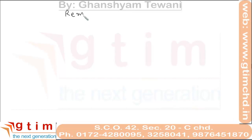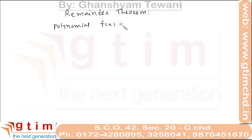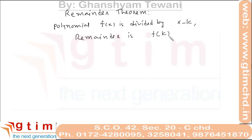Remainder Theorem. When polynomial f(x) is divided by x minus k, the remainder is f(k). In fact, when we divide polynomial f(x) by x minus k, the remainder is always constant and the value of that constant is f(k). For example, if we divide x squared minus 3x minus 4 by x minus 2, then the remainder will be f(2).